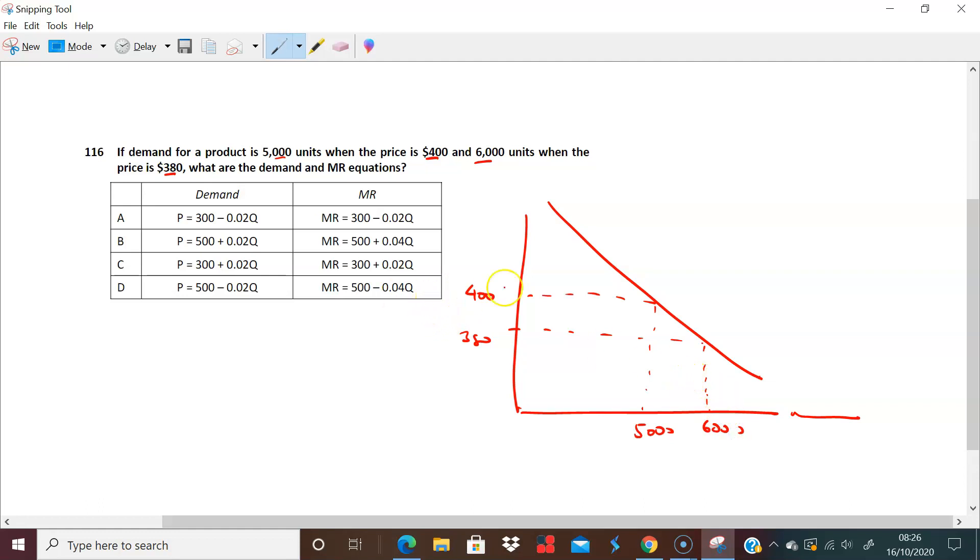So the question here is, what is the gradient, or if you like, by how much does the price fall for one extra unit? And so that's what we do here. Simply saying what's 400 minus 380 divided by 6,000 minus 5,000. So just the rise versus the run or the gradient. And so you have here 20 over 1,000. And so this B becomes 0.02.